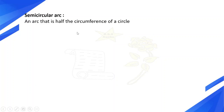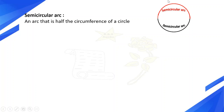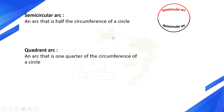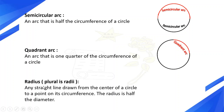Semi-circular arc: an arc that is half the circumference of a circle. This is the semi-circular arc. Quadrant arc: an arc that is one quarter of the circumference of a circle.